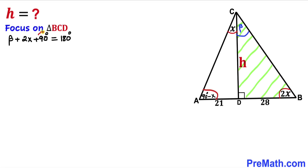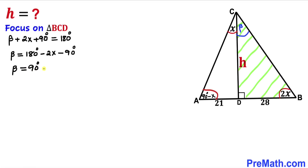Now let's move these angles to the right hand side. So angle beta is going to be equal to 180 degrees minus 2x minus 90 degrees. Let's simplify the right hand side: beta equals 90 degrees minus 2x. So therefore I'm going to replace this angle beta by 90 degrees minus 2x.